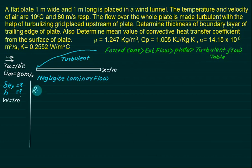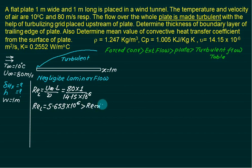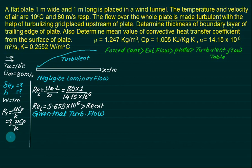For external flow over a flat plate, the characteristic length L_c equals the dimension parallel to the plate = 1 m. Re_L = u∞·L_c / ν = 80 × 1 / 14.15×10⁻⁶ = 5.653×10⁶, which is well above the critical Reynolds number, confirming fully turbulent flow. The Prandtl number is Pr = ρ·ν·C_p / k, with ρ = 1.27, C_p = 1005, ν = 14.15×10⁻⁶, and k = 0.252, giving Pr ≈ 0.695.